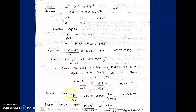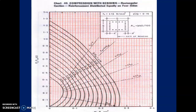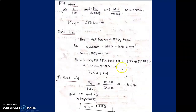Similarly, since the column is square (400×400), Muy1 is also 256 kN·m. Then we find Puz — the total axial capacity of the column with the provided steel — using: Puz = 0.45×fck×Ac + 0.75×fy×Ast. With Ac = 400×400 - 5890 and Ast = 5890, Puz comes out to approximately 3567 kN.